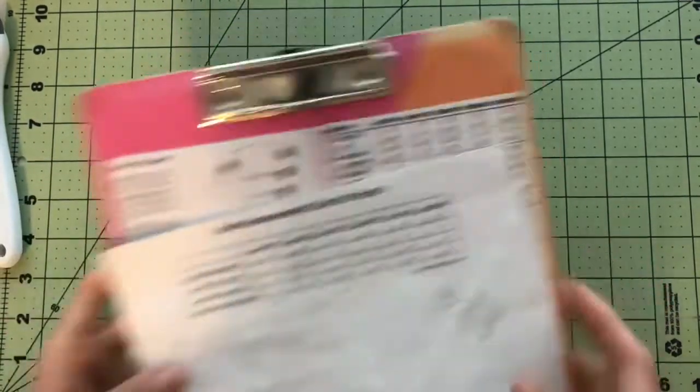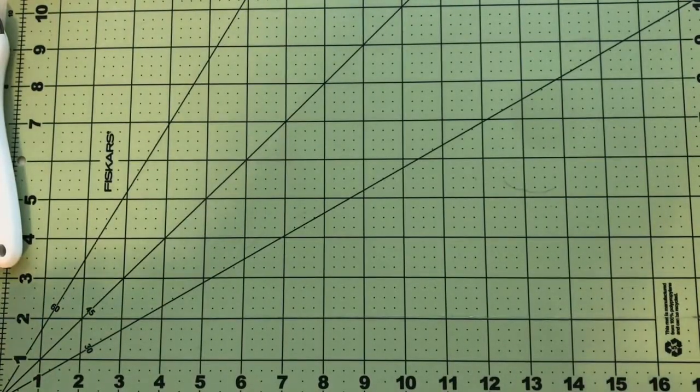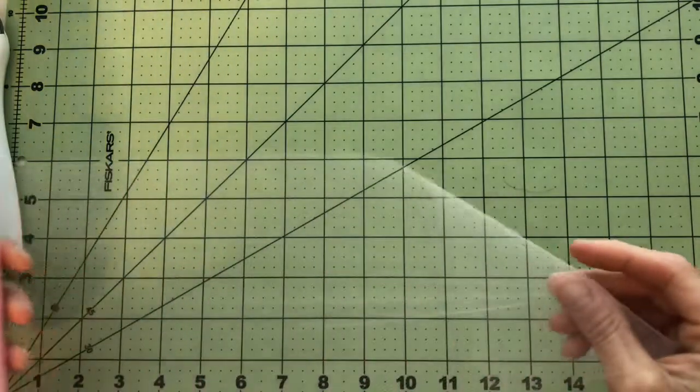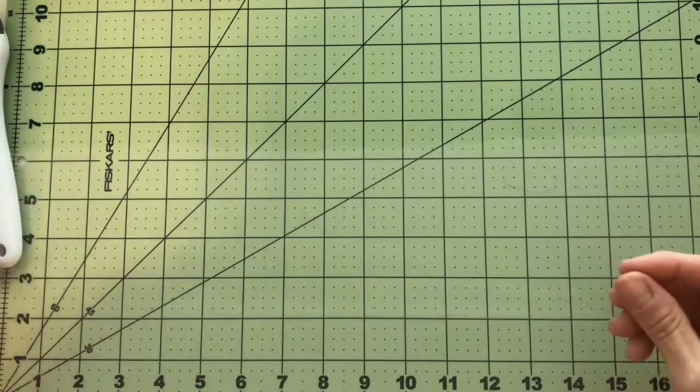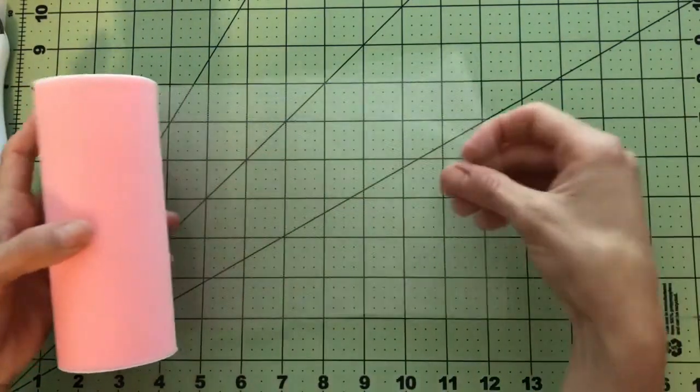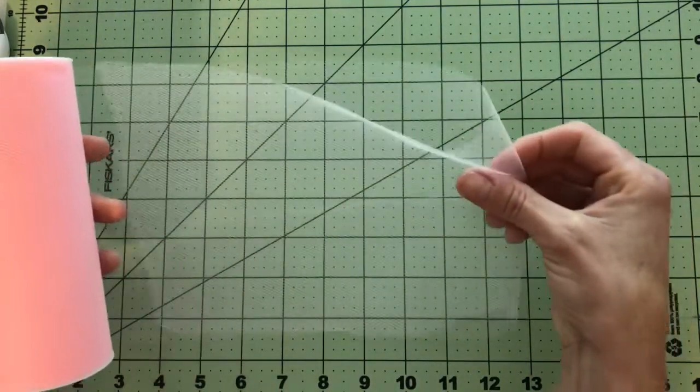When I'm cutting my tulle, I'm going to want to make it 12 inches long, and maybe just slightly over because I'm going to be tying it in a knot. That way, when it's folded in half, it will create the correct length for the dress.